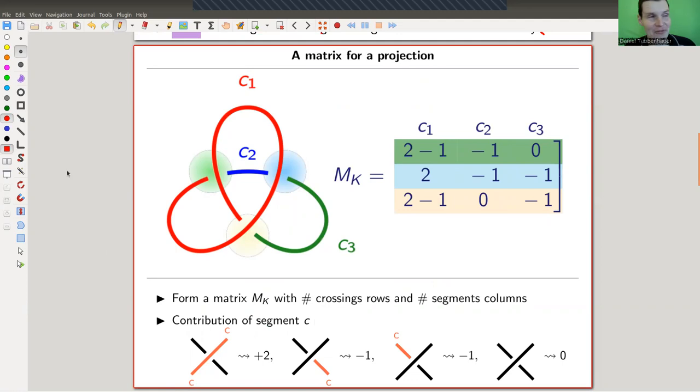So yes, now it's really the trefoil. Here's my example, the trefoil knot. And what you do is you color all arcs or all segments of the knot. You give it a number. So here I have my segment C1, segment C2, the blue one, segment C3, the green one. And you also give the crossings some numbers. So here's crossing one, here's crossing two, the blue one, the green one, and the orange type crossing is crossing three.